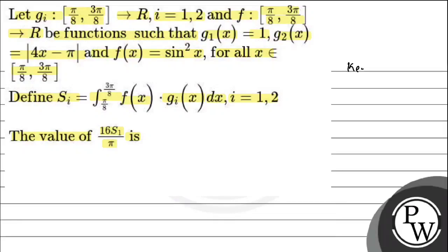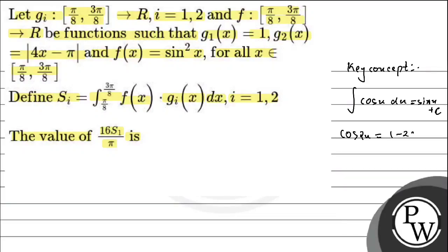The key concept to solve this question: इस question में एक basic integration है, जैसे integration of cos x dx = sin x + c. इसी तरीके से कुछ basic trigonometric identities हैं, जैसे cos 2x = 1 − 2sin²x, तो sin²x को हम लिख सकते हैं (1 − cos 2x)/2. तो ये दो basic concepts use हो रहे हैं इस question को solve करने के लिए।